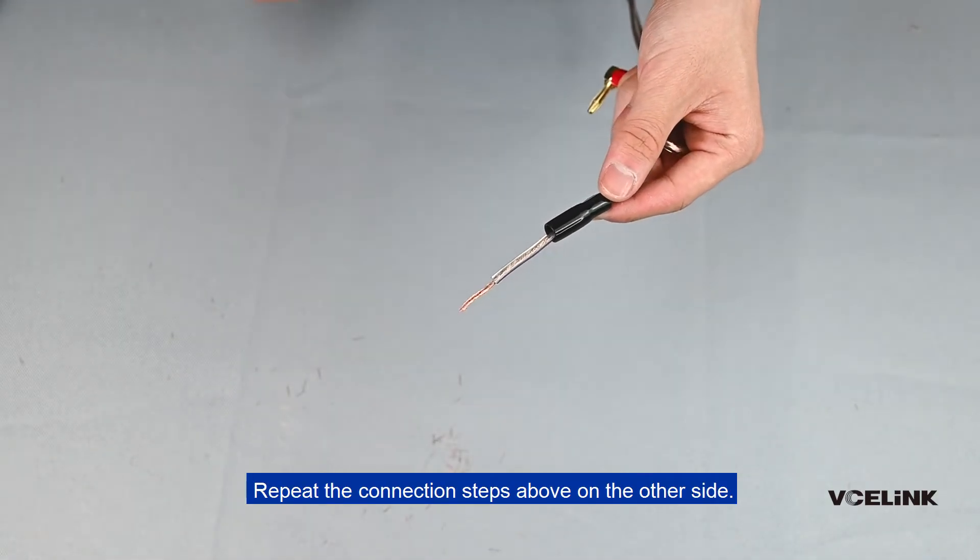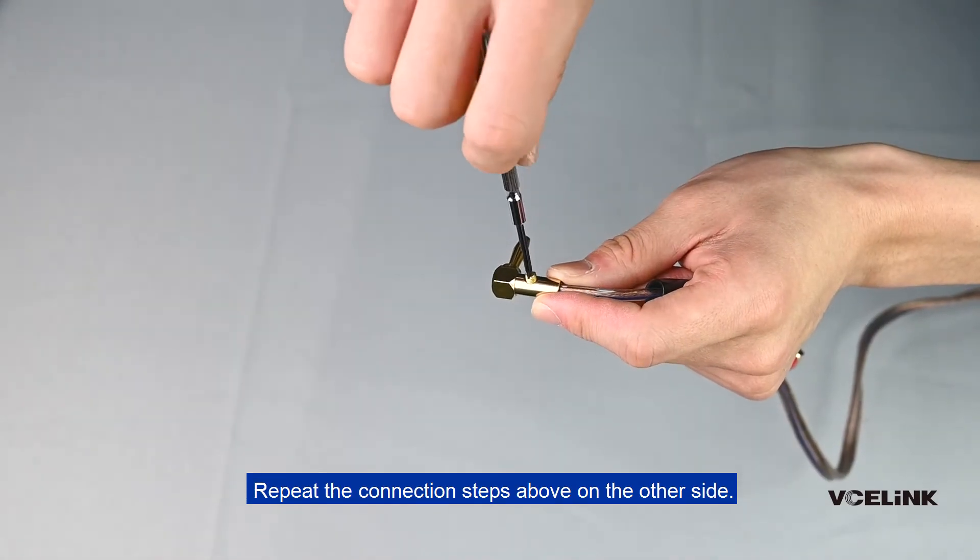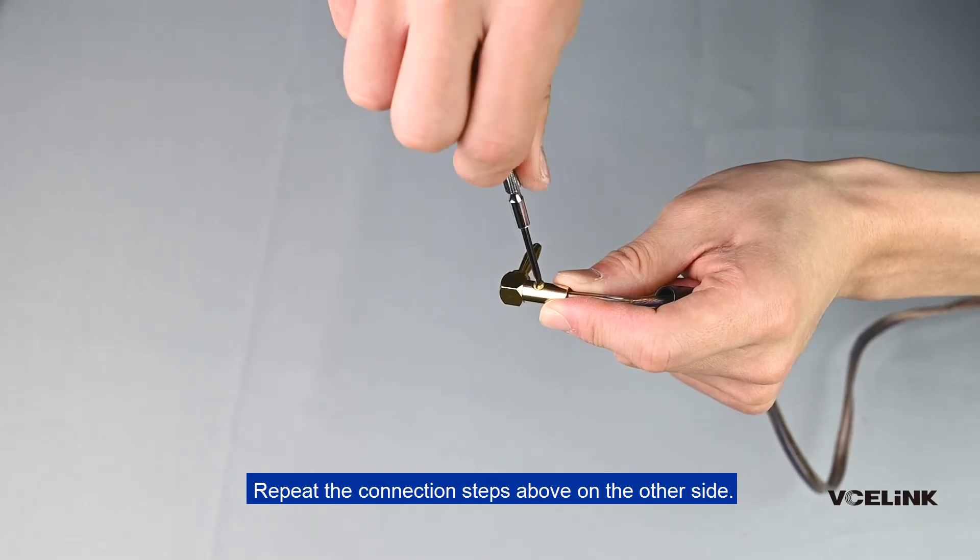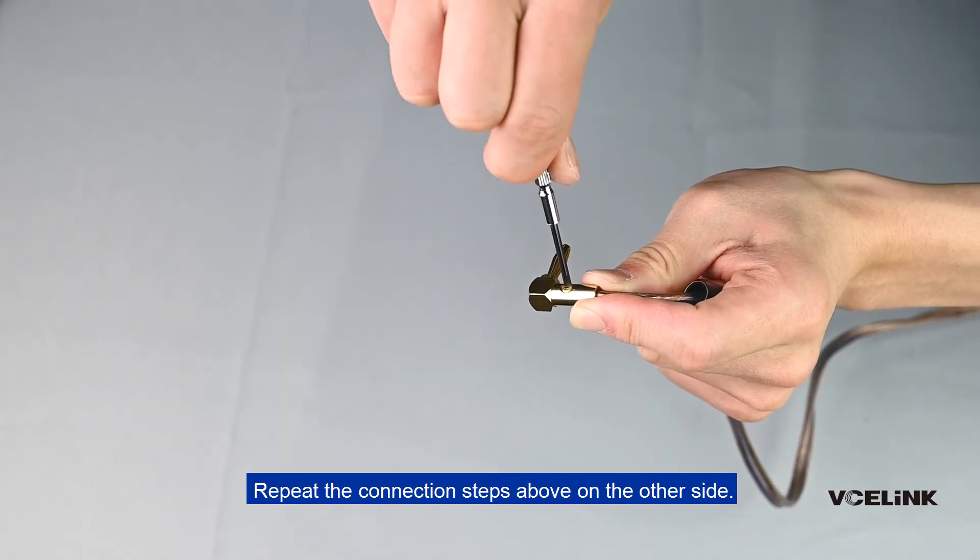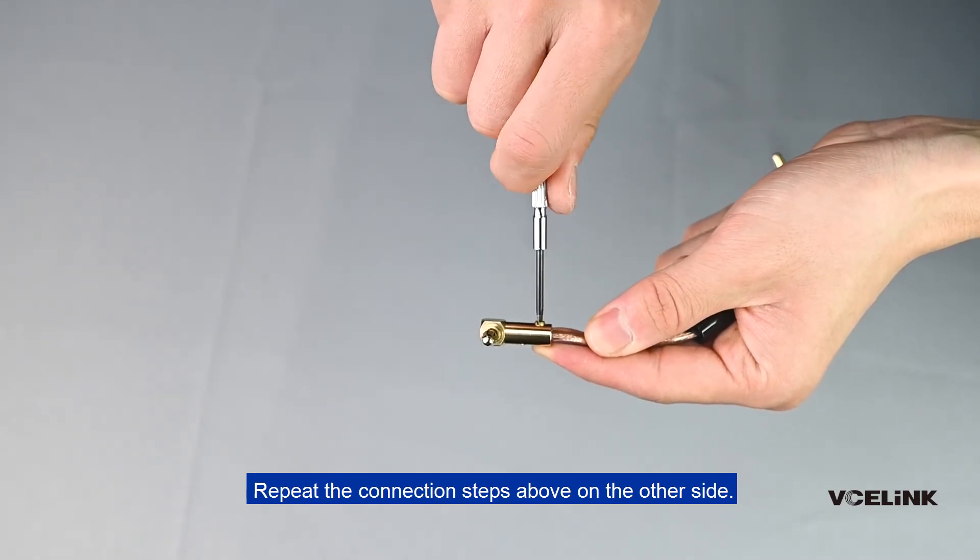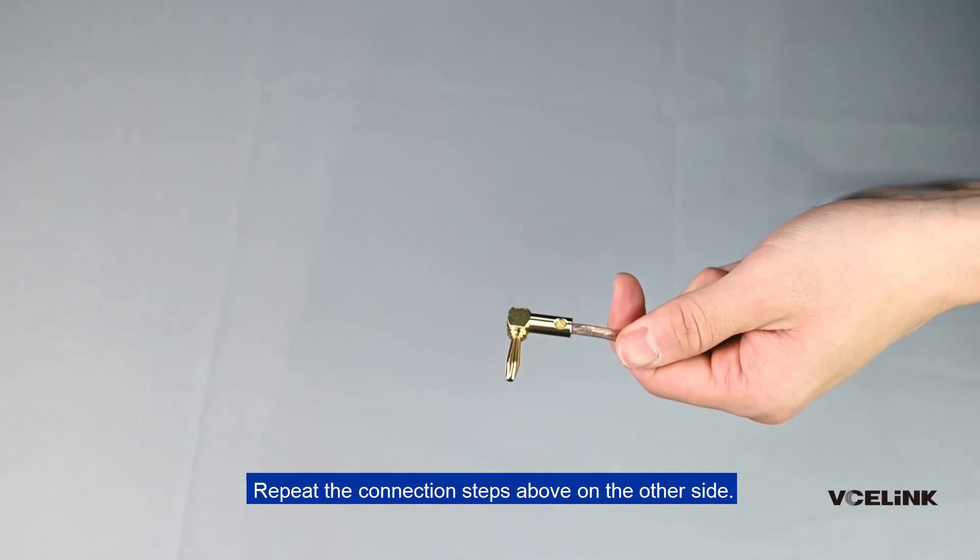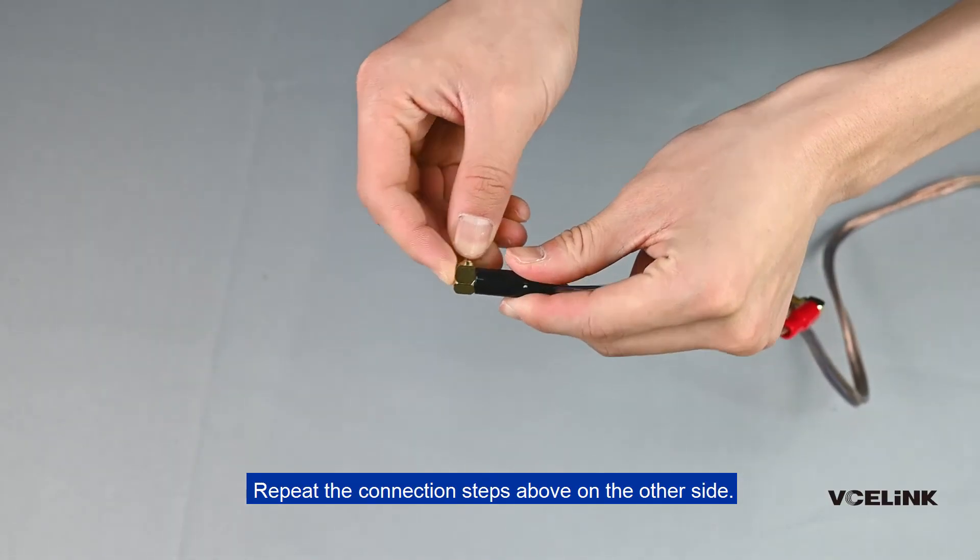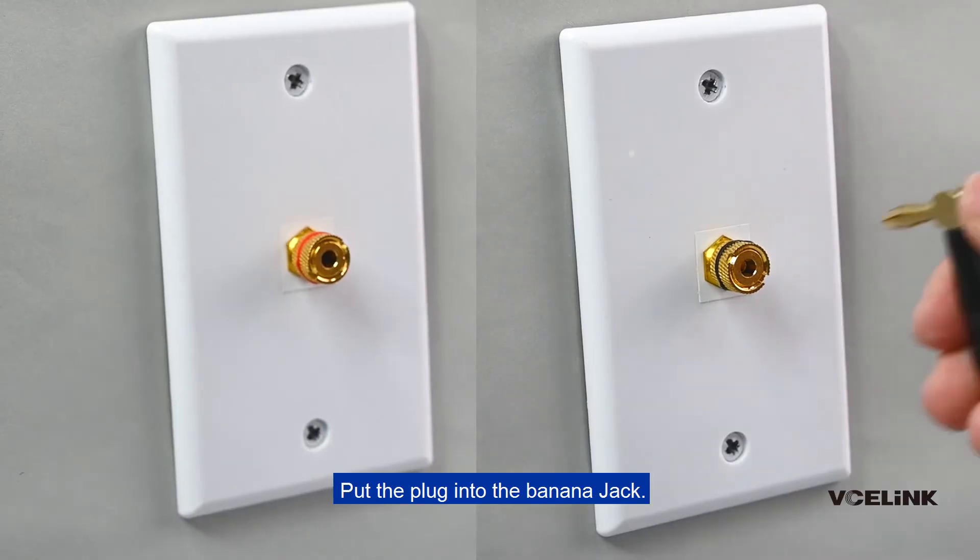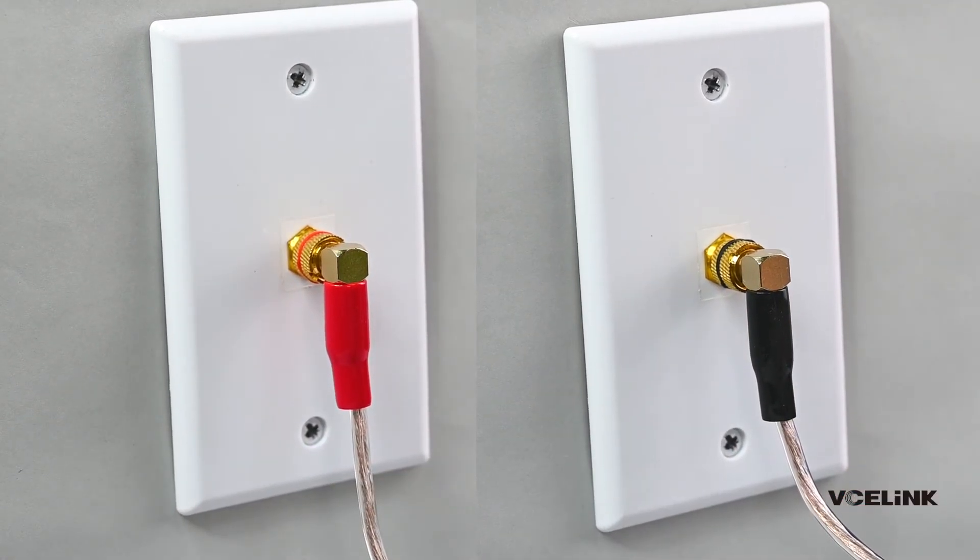Repeat the connection steps above on the other side. Put the plug into the banana jack. Finish.